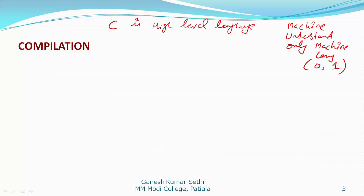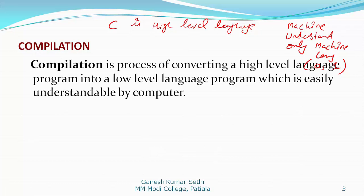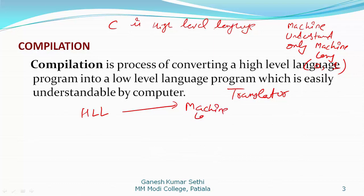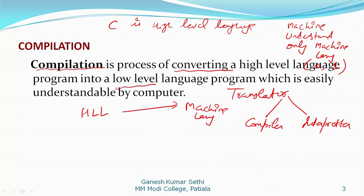Whenever we are making or developing a program in a high level language, we need a translator. A translator converts your high level language program into a machine level language program. There are different types of translators — a translator can be a compiler or it may be an interpreter. C language is basically a compiler-based language. Compilation is the process of converting a high level language program into low level, or machine language, which is also known as a low level language program, easily understandable by the computer.